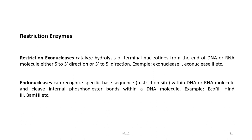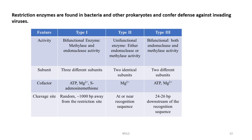What do these restriction enzymes do? They fall into two classes: restriction exonucleases and restriction endonucleases. Exonucleases catalyze hydrolysis of terminal nucleotides from the end of a DNA or RNA molecule, either in the 5' to 3' or 3' to 5' direction, with examples like exonuclease 1, 2, etc. Endonucleases recognize specific sequences called restriction sites within a DNA or RNA molecule and cleave internal phosphodiester bonds, with examples such as EcoRI, HindIII, and BamHI.